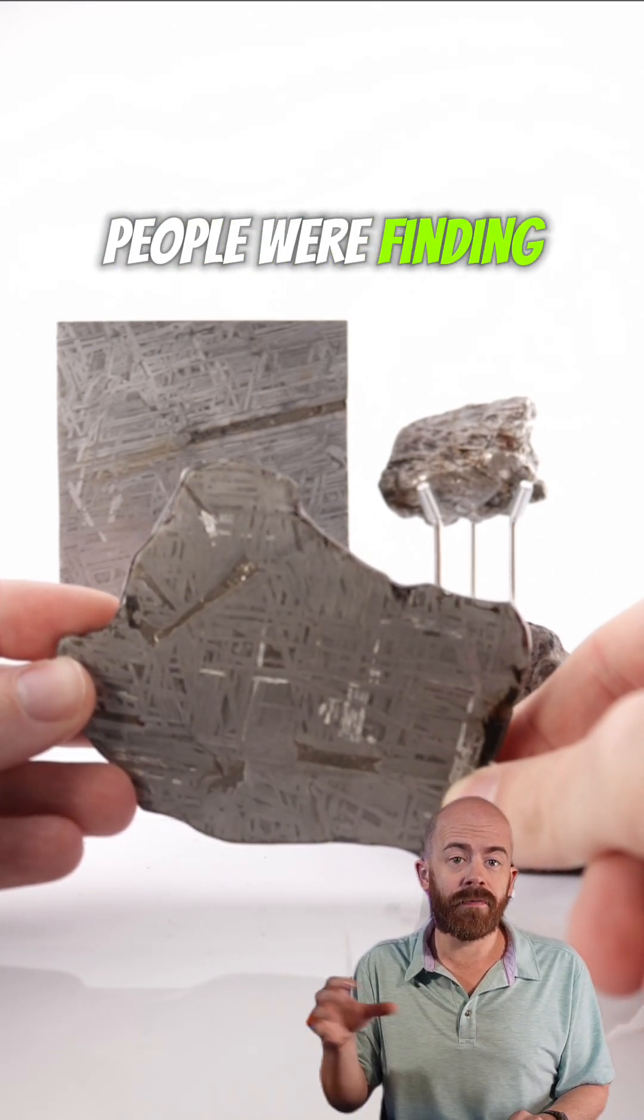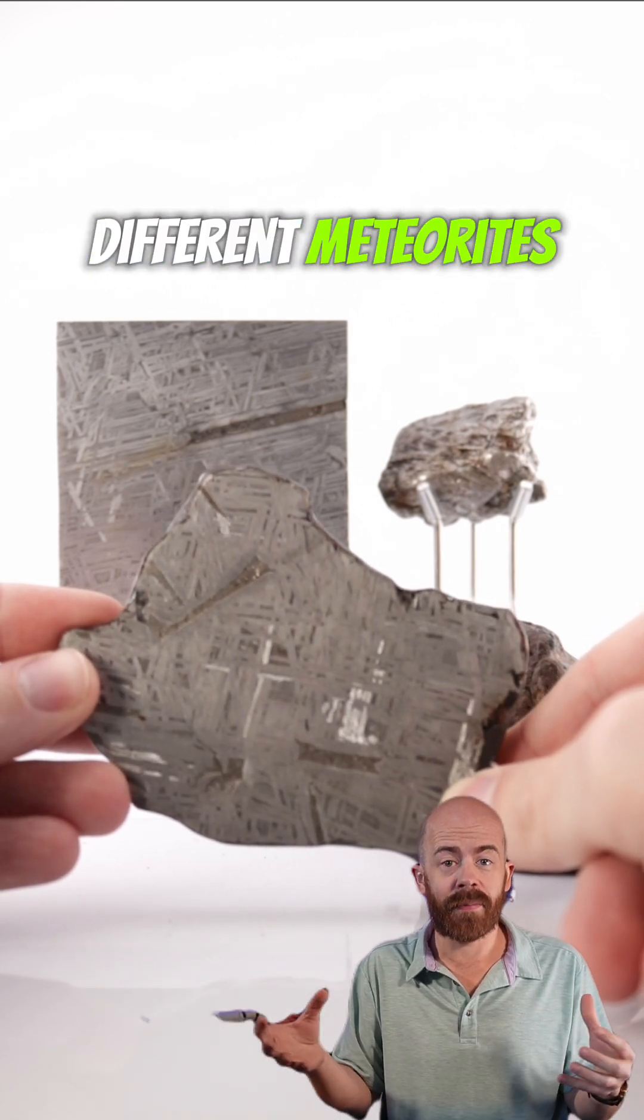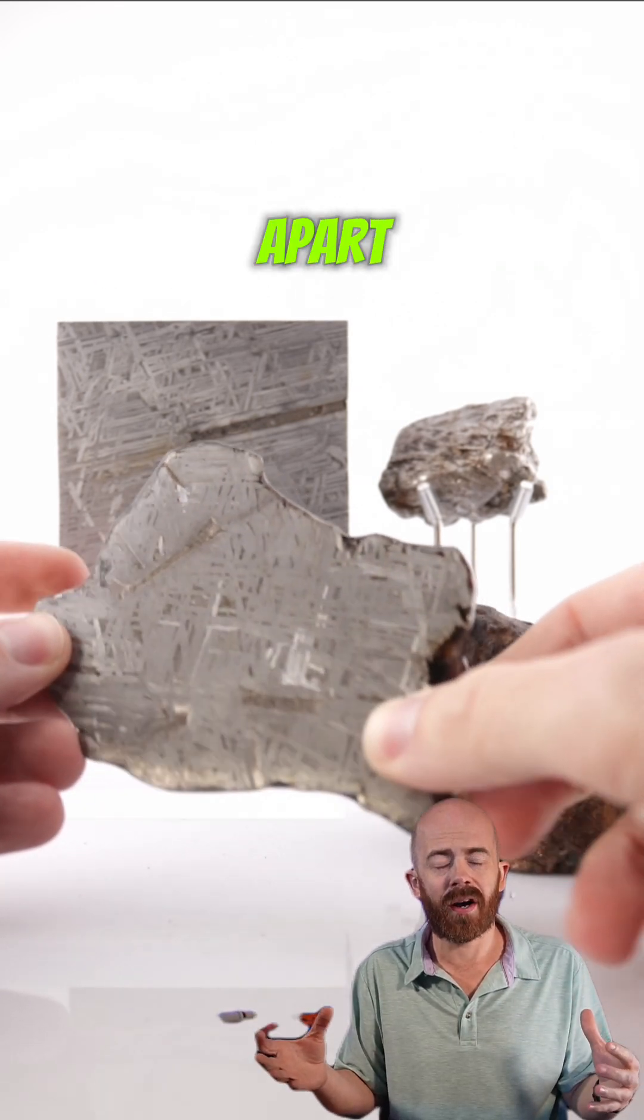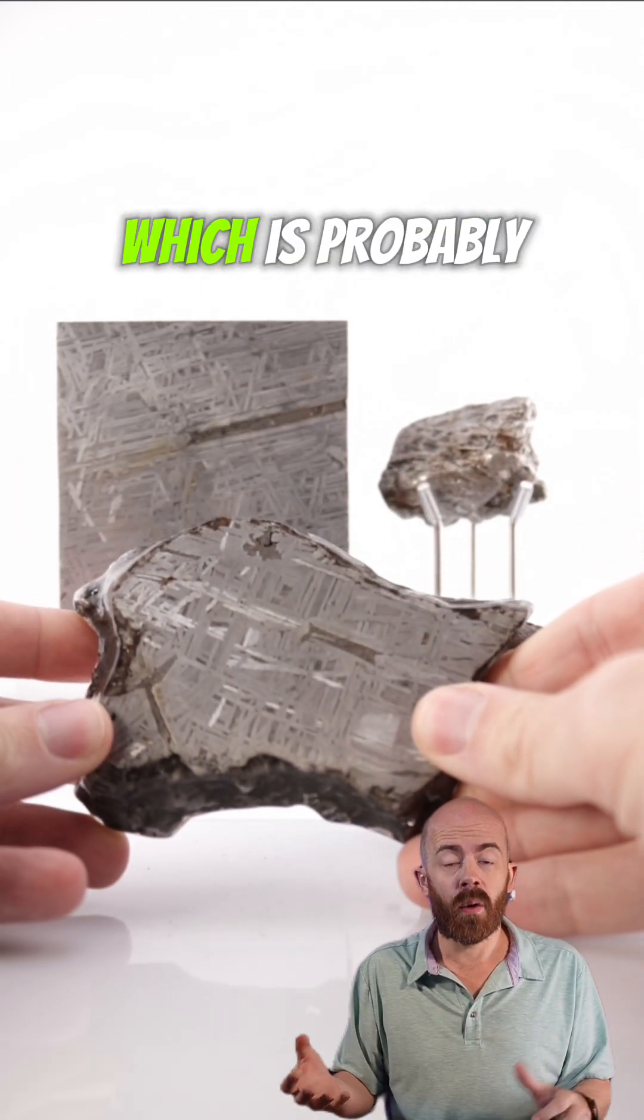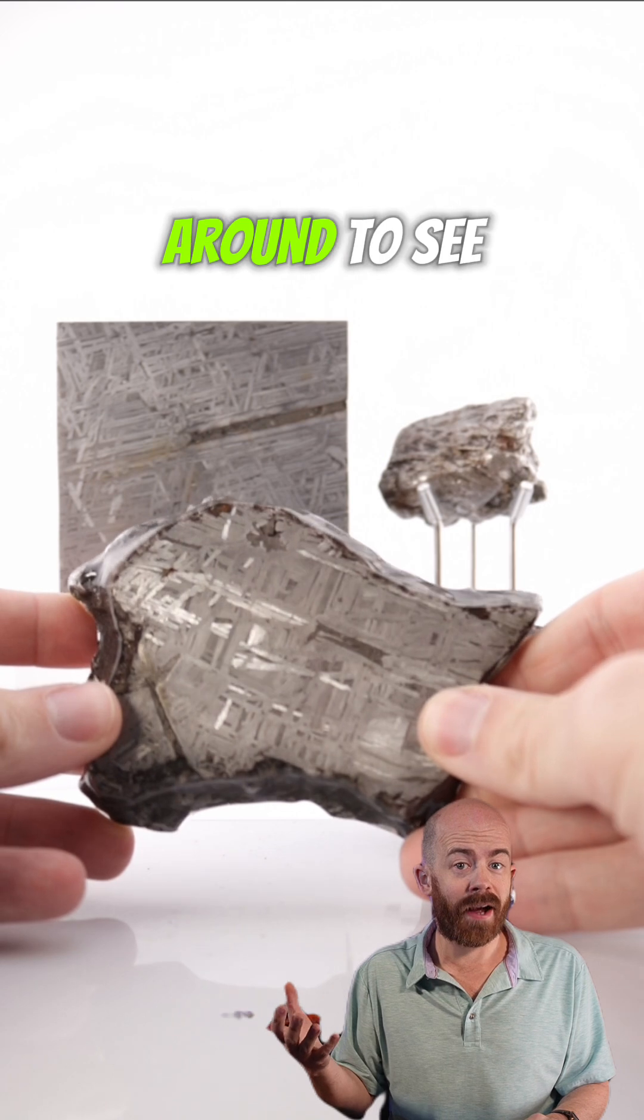It's kind of interesting. Back in the early days when people were finding it, they thought they were all fragments of different meteorites because they were found so far apart, but it turns out after doing chemical analysis, they're all related to the exact same meteorite fall, which was probably quite a show if anyone was around to see it.